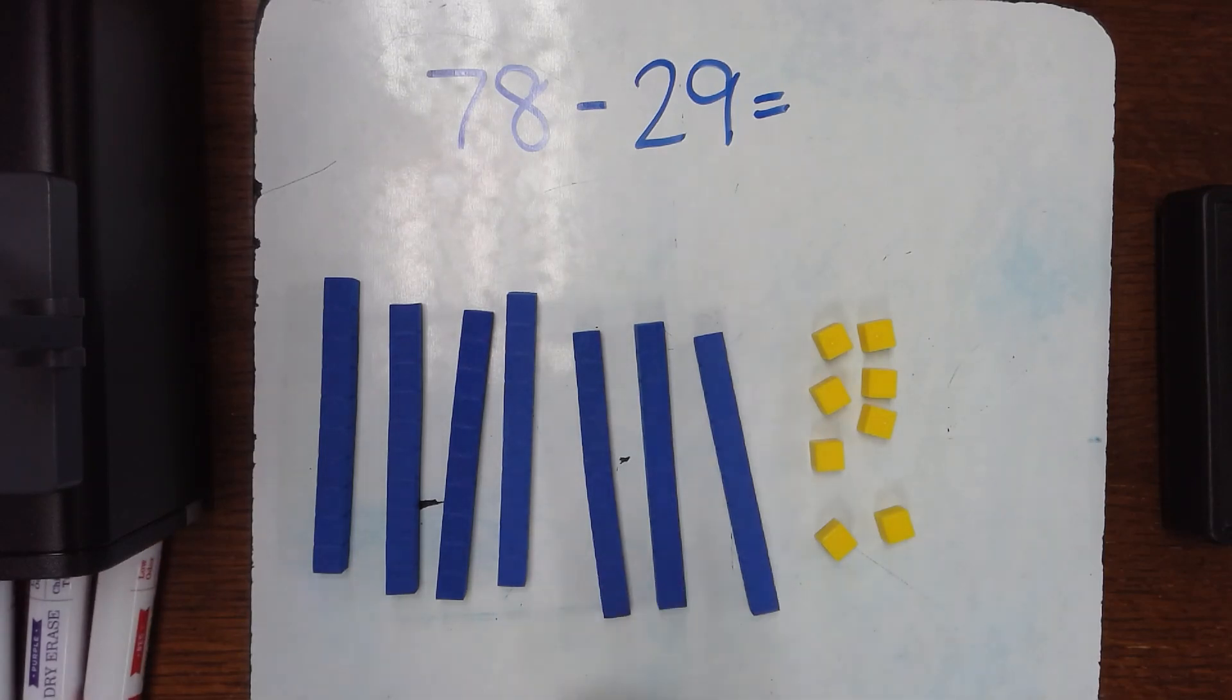So the first strategy is using place value blocks. Now your kids have already practiced doing this drawing them out. I wanted to show you the actual blocks so you know what they're drawing, and then I'm going to show you what it looks like whenever it's drawn, and also on a number line going up and down. So here we go. I'm going to try to make this as short as possible.